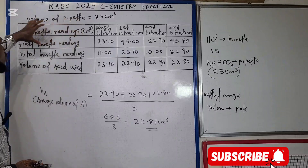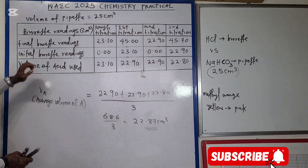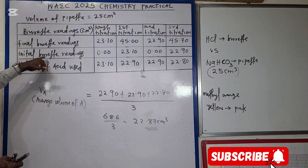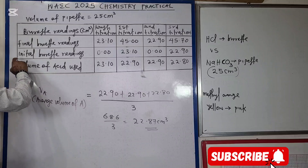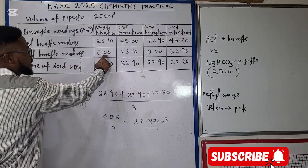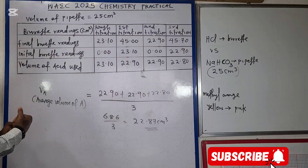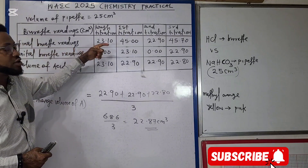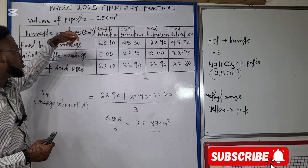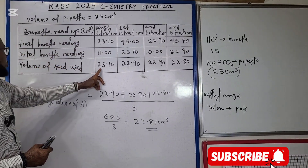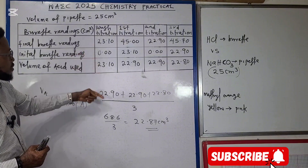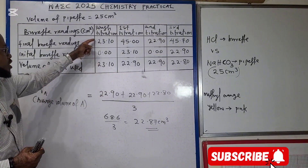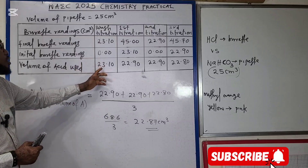The burette readings are in cm³. For our rough titration, the initial burette reading is 0.00 cm³. When we run the first titration, the final burette reading is 23.10 cm³. Final minus initial gives the volume of acid used: 23.10 minus 0.00 equals 23.10 cm³ for the rough titration — we cross that out.